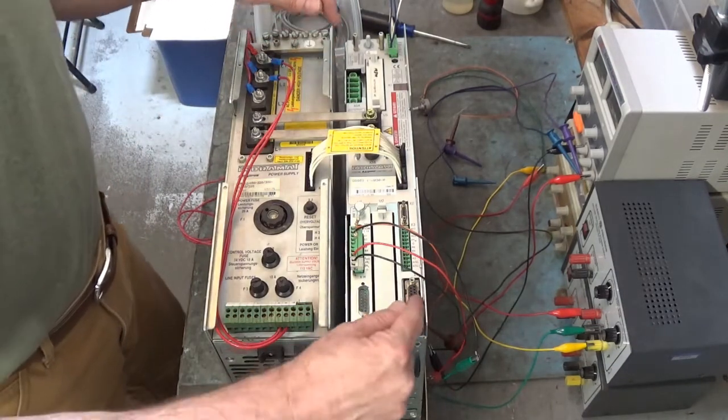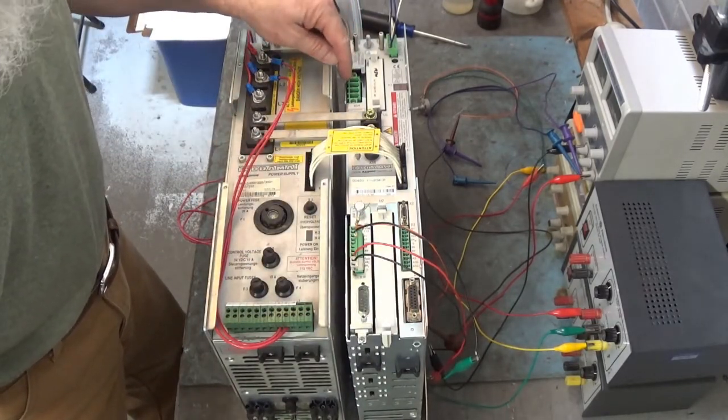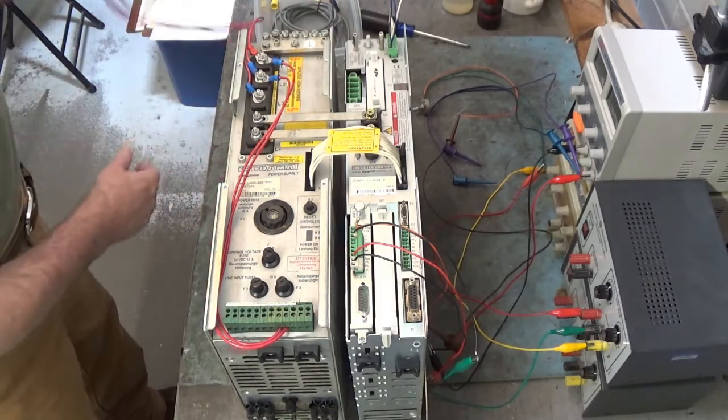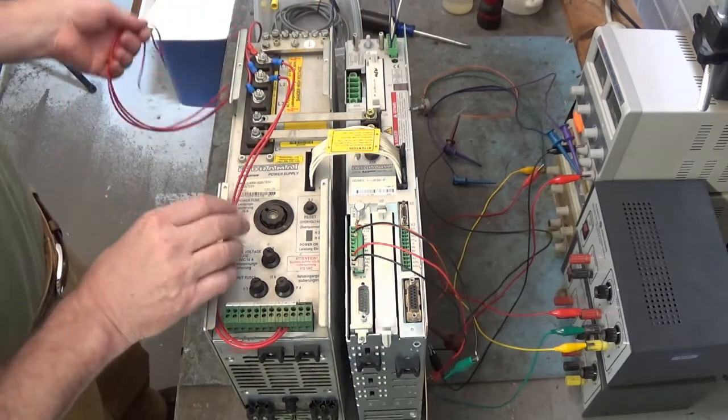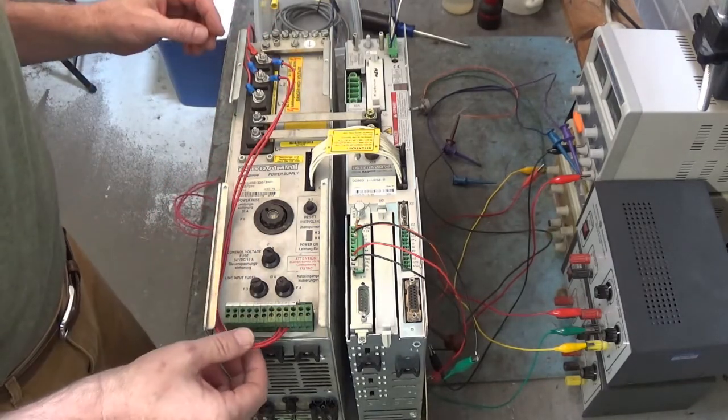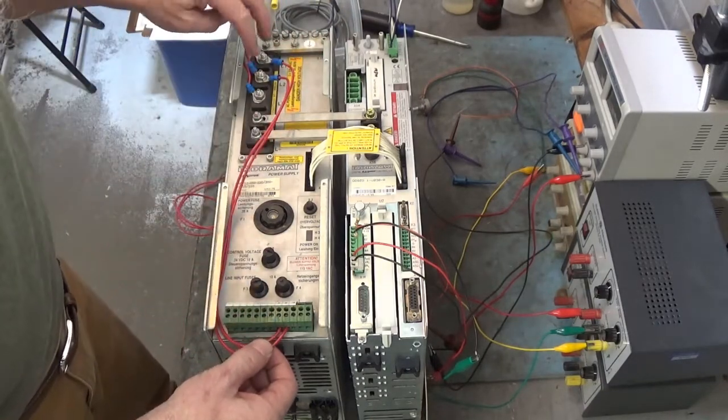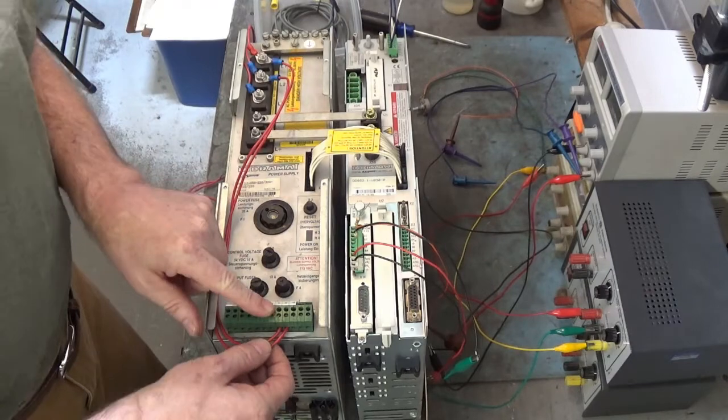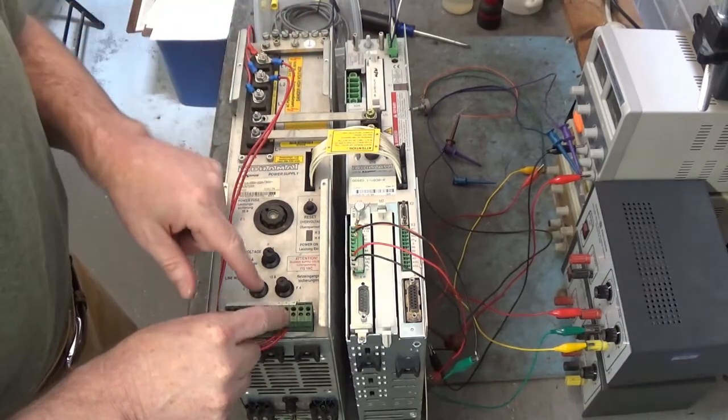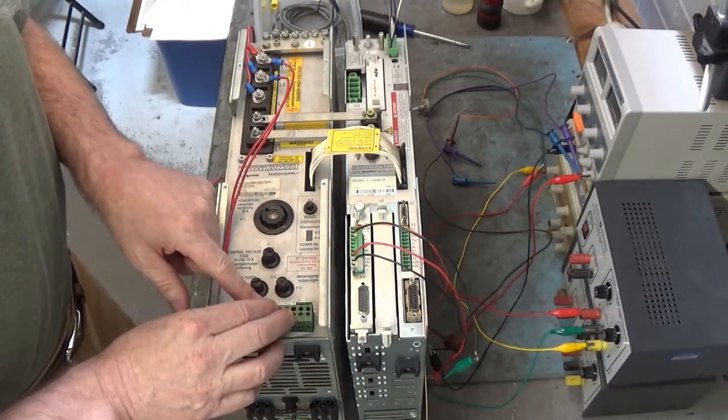We need to hook up the resolver to this connector from the servo motor. UV and W connect here. Then I've got to hook up L1, L2, and L3 to the bus power supply. That's 220 volts AC. You see we have two wires that come off of L1 and L2 that come down here to terminals 8 and 9. That power up the control voltages inside this bus power supply.